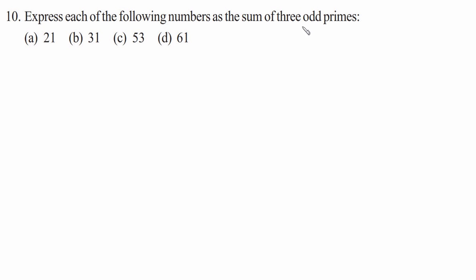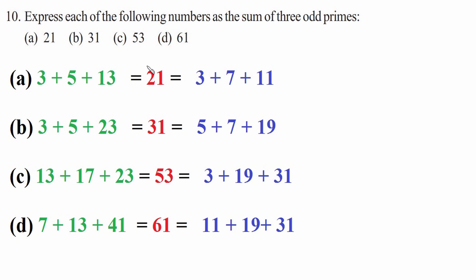Question ten: express each of the following numbers as the sum of three odd primes. 21 can be written as 3 plus 5 plus 13, or 3 plus 7 plus 11. 31 can be written as 3 plus 5 plus 23, or 5 plus 7 plus 19. 53 can be written as 13 plus 17 plus 23, or 3 plus 19 plus 31. 61 can be written as 7 plus 13 plus 41, or 11 plus 19 plus 31.